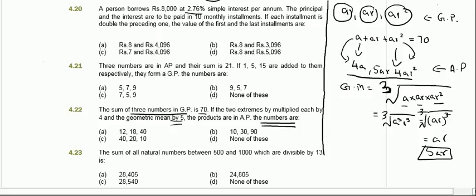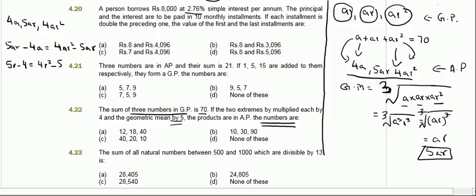Since 4a, 5ar, and 4ar squared are in arithmetic progression, the second term minus the first term equals the third term minus the second term. Dividing all terms by a, this simplifies to 5r minus 4 equals 4r squared minus 5r.